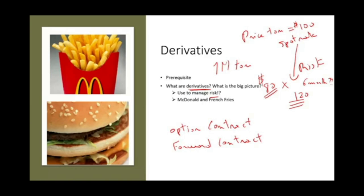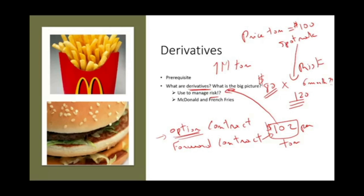Either an option contract or a forward contract — to do what? To lock the prices. Maybe McDonald's is willing to pay $102 per ton. The option gives them the right, not the obligation. The forward contract would lock them at $102, and they have to buy it at $102 — the forward contract is more stringent. Most probably they will buy an option contract if available, or they will buy a forward contract. They're happy with $102, and they need the fries. By locking the price, they mitigate the risk — they manage the risk. This is how derivatives are used to manage risk.